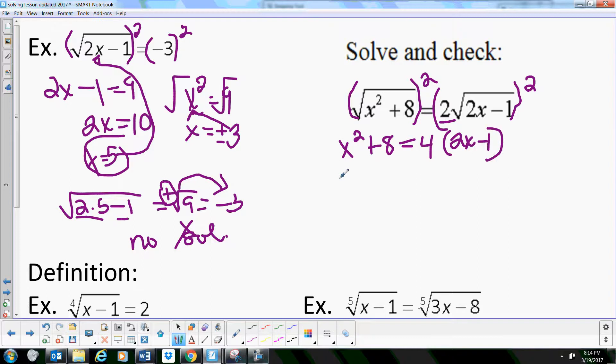And then you'll get x squared plus 8 is equal to 8x minus 4. Now let's collect all our like terms so we get x squared minus 8x plus 12.